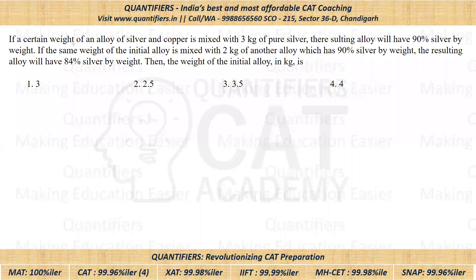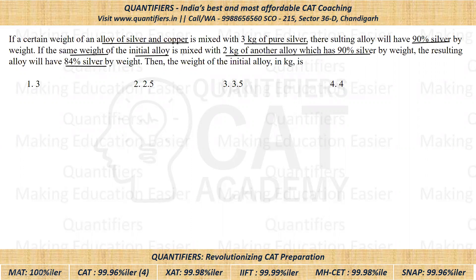In the question, a certain weight of alloy of silver and copper is mixed with three kg of pure silver, due to which the resulting alloy has 90% silver. Then if the same weight of initial alloy is mixed with two kg of another alloy which has 90% silver, the resulting alloy has 84% silver. We have to find the weight of the initial alloy.